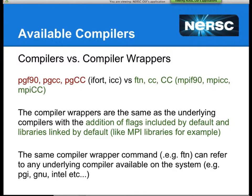What we actually recommend on Hopper and Edison is to use the wrapper commands: FTN, CC, and capital CC. On Carver, use MPIF90, MPICC, and MPICXX. What these compiler wrappers do is essentially the same as the underlying commands like PGF90, but they include a bunch of things for free — the correct MPI libraries to use on those machines, and by default some other libraries like math libraries. As you load Cray-provided modules, those libraries are also automatically included in the wrapper.